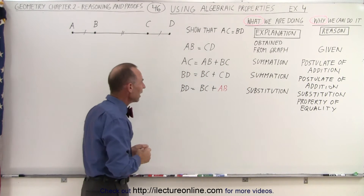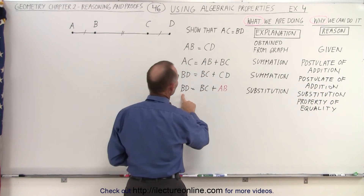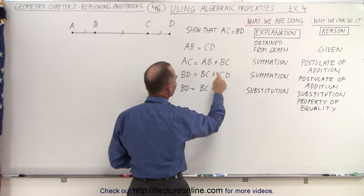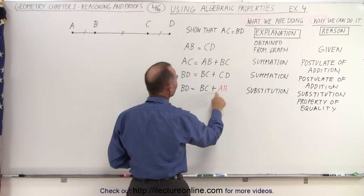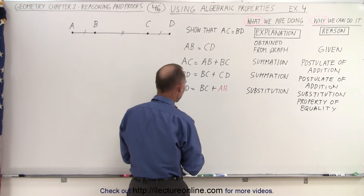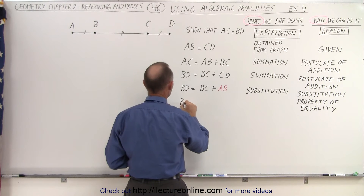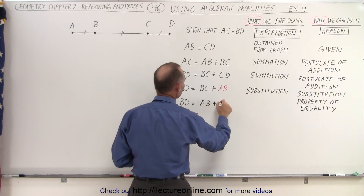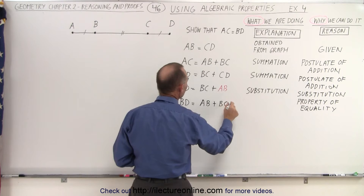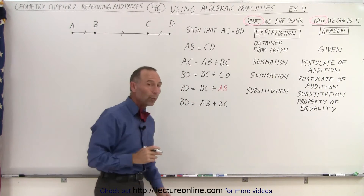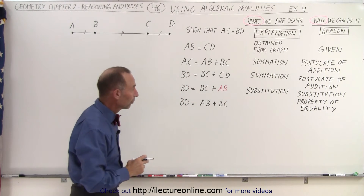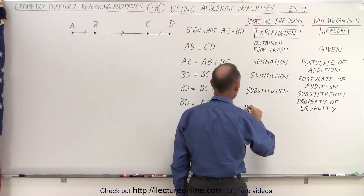Now I take a look at this: here we have AB plus BC, and here we have BC plus AB. So the next thing I'm going to do is write that BD is equal to AB plus BC. I simply rearrange the order of those two terms.